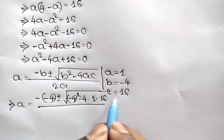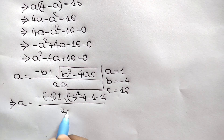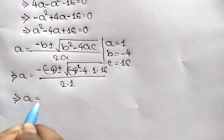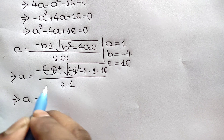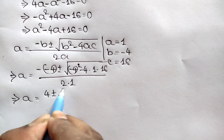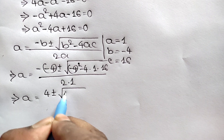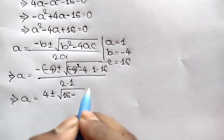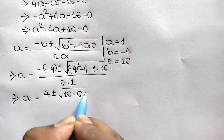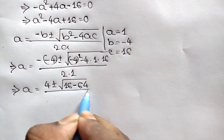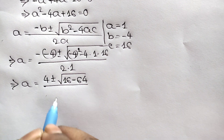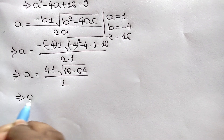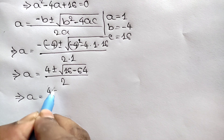Substituting: a equals negative (negative 4) plus or minus square root of (negative 4) squared minus 4 times 1 times 16, all over 2 times 1. That gives 4 plus or minus square root of 16 minus 64, over 2.